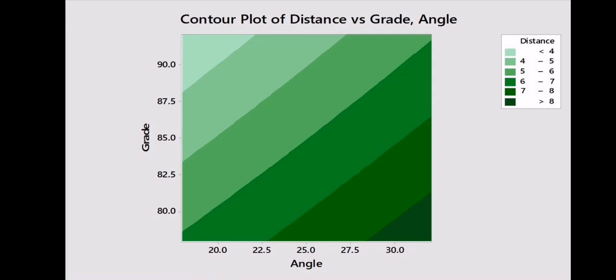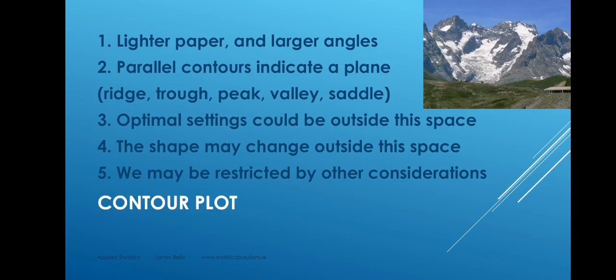And the fifth point to make is that we might not be able to follow the path to the peak because there may be other considerations. For example, a very low grade of paper might give a good distance for the paper airplane, but might give a very short lifetime. So there could be some other issues that arise, or a very low grade of paper might not be possible because the current paper manufacturing process might be unable to deliver it.